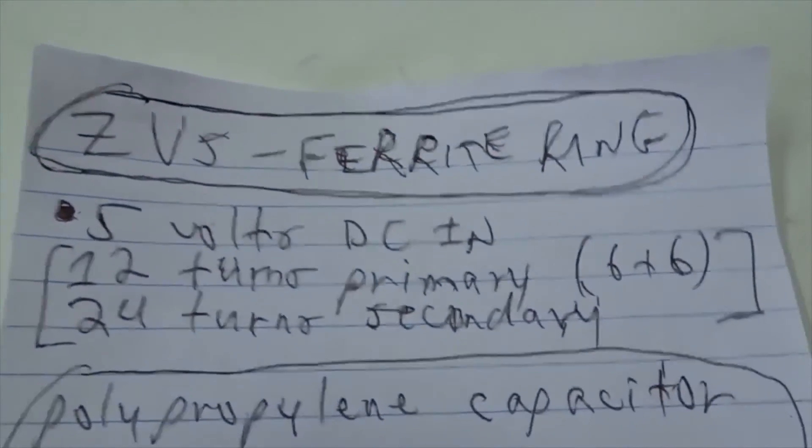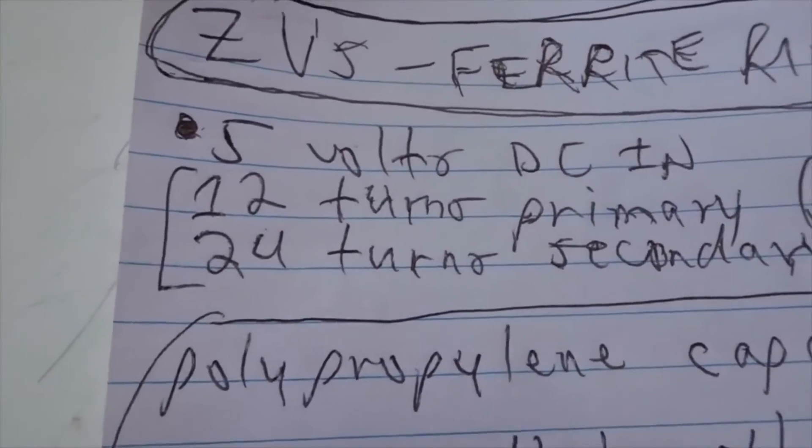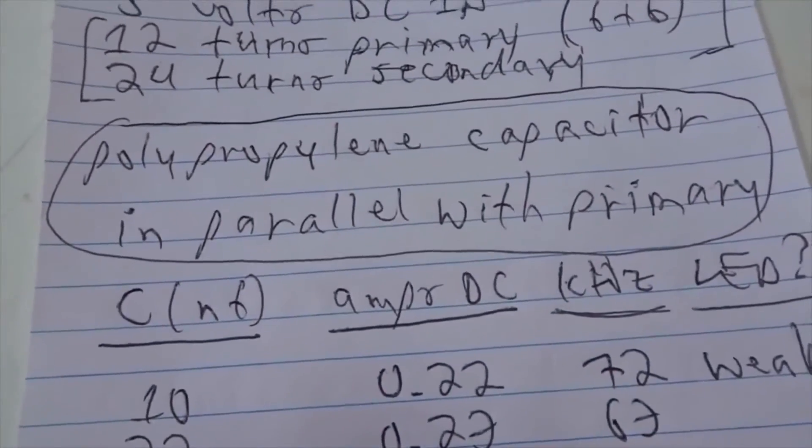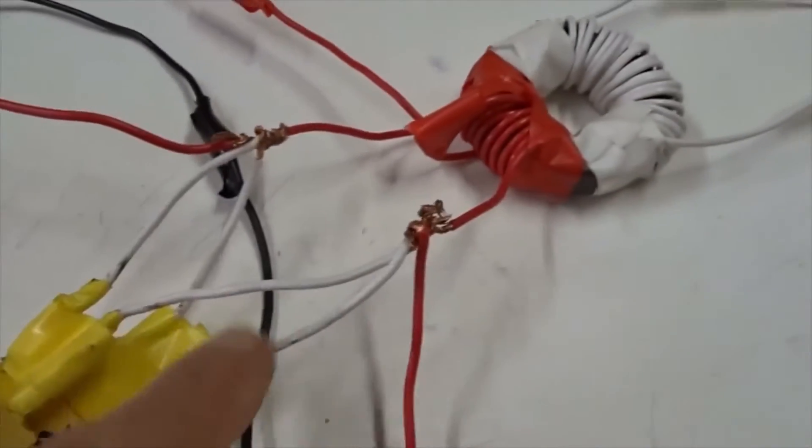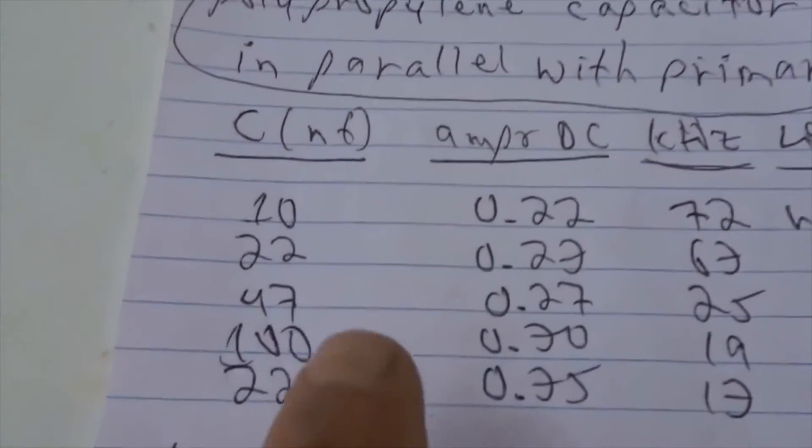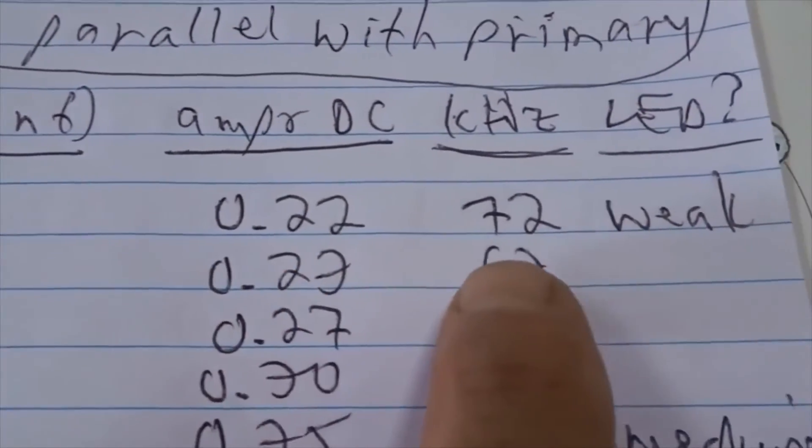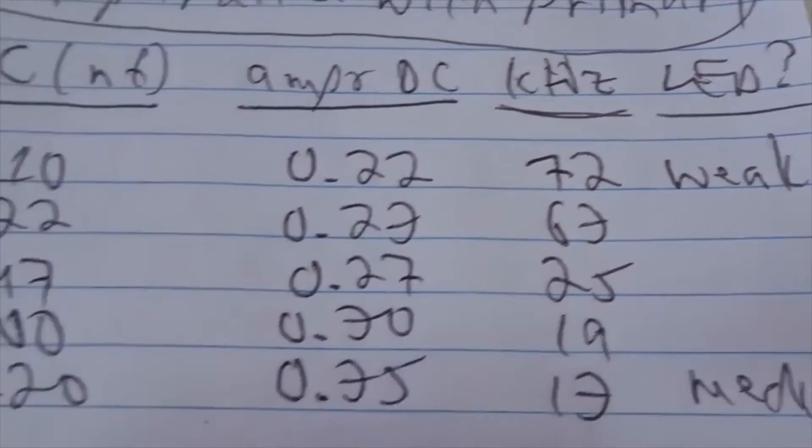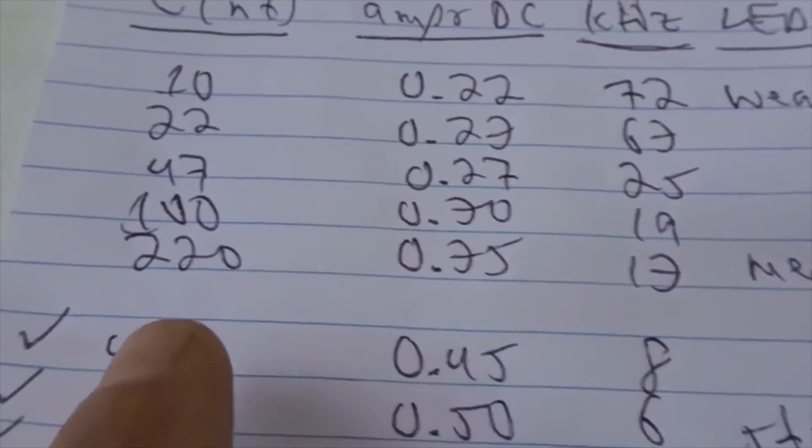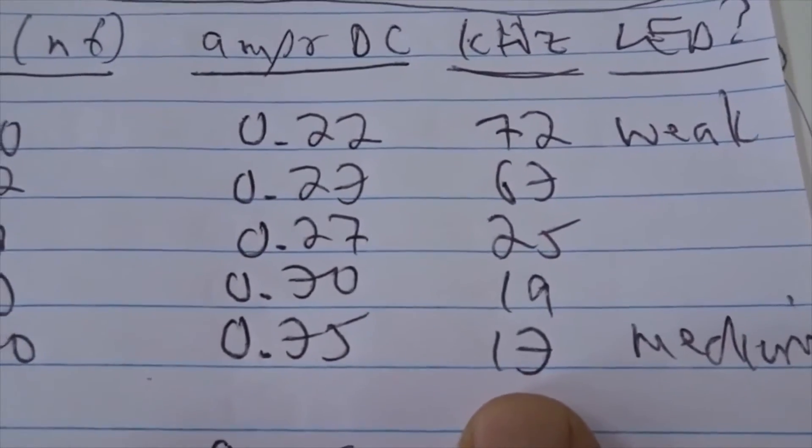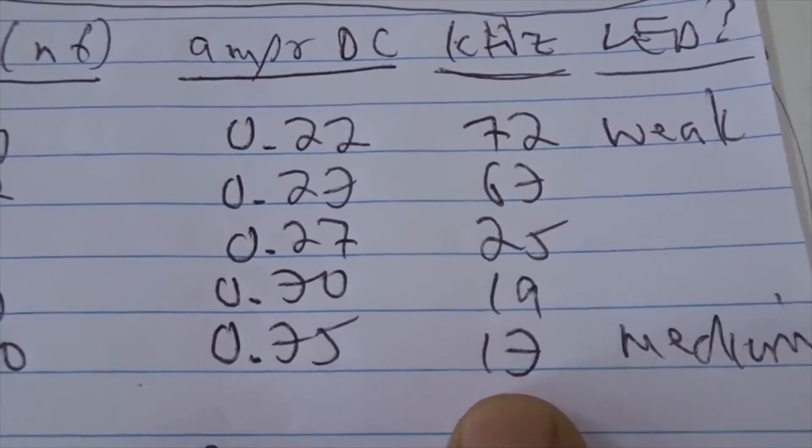Let's see how it works with all the capacitor values studied. ZVS ferrite ring transformer at 5 volts. The value I measured at 12 turns on the primary, 24 turns on the secondary. A polypropylene capacitor in parallel with the primary. For low capacitance, we get low current, 72 kilohertz frequency, very weak lights. That holds true until we hit about 220 nF—a little higher current. That kilohertz drops down to 13 because the capacitance value is larger and it gets medium.